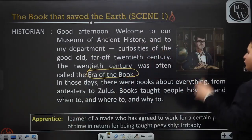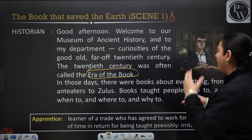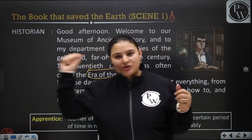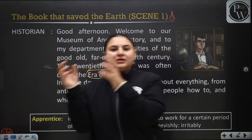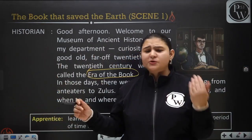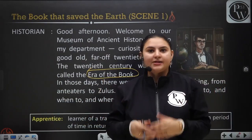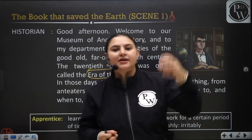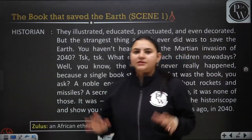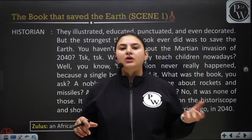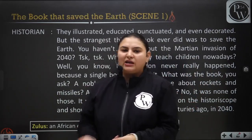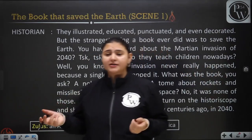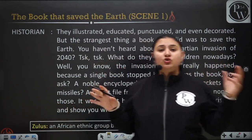In those days there were books about everything from Anteaters to Zulus. Books taught people how to and when to and where to and why to. She is saying that basically books covered everything — from animals to South African tribal people. You could find books on each and everything. Books gave us all the answers. Even if I remember our own time, when we didn't have Google, we used to search everything in encyclopedias and dictionaries.